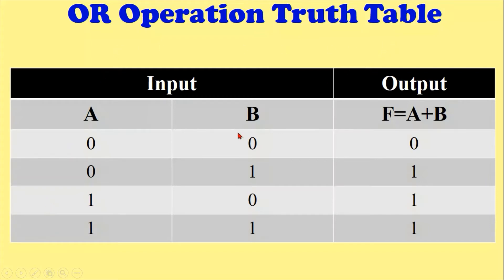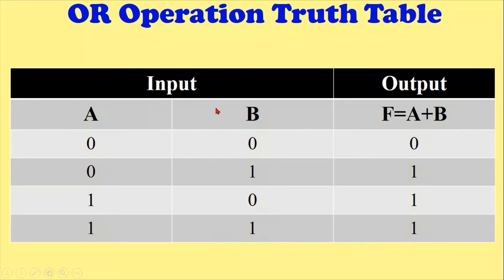In the OR operation truth table, the output is F equals A plus B, because OR means addition. First value: zero plus zero equals zero. Second: zero plus one equals one. Third: one plus zero equals one. Fourth: one plus one equals one, because OR operation means addition. That was the OR operation truth table.